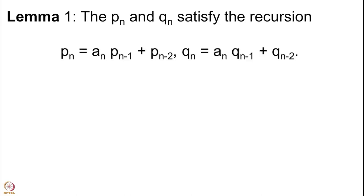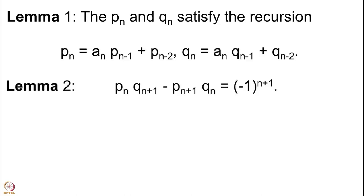Pn and Qn can be constructed recursively, and this recursive construction is very important because it tells us how Pn+1 and Qn+1 behave compared to Pn and Qn. The second lemma says that Pn·Qn+1 minus Pn+1·Qn equals plus or minus 1 — it cannot be anything other than this.